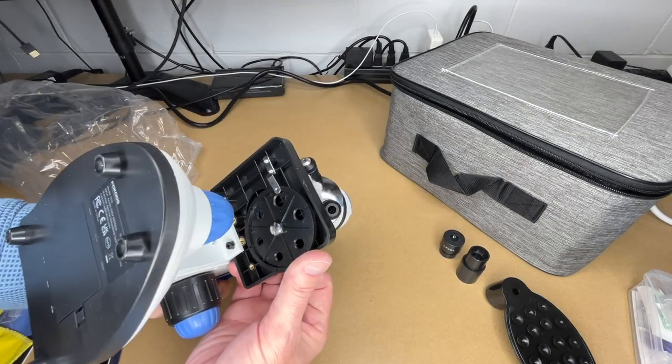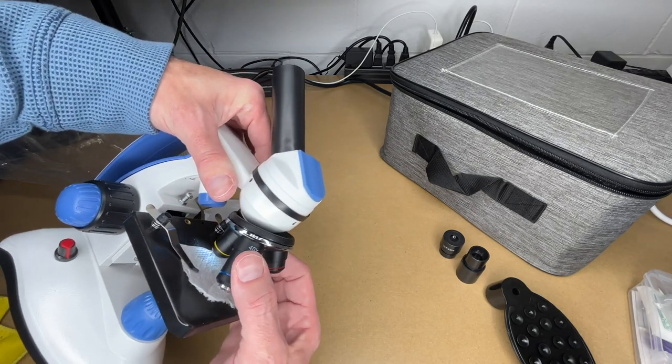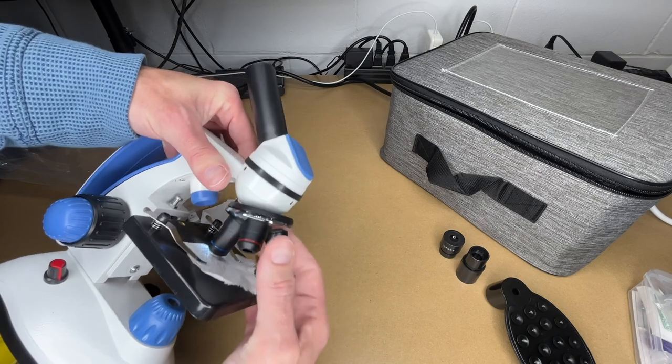To change the aperture, you can turn this here. That will change how much light comes in from the bottom. Then to change the objective lens, we can rotate here, and it clicks in place.